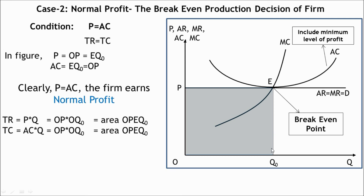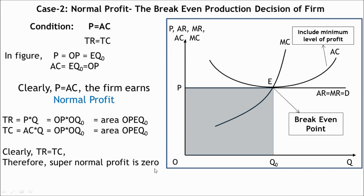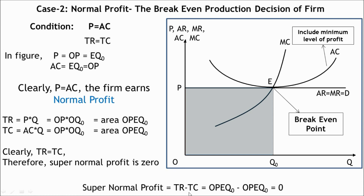Total revenue shown by the area OPEQ0 is equal to total cost shown by the area OPEQ0. That is, total revenue equals total cost, which implies supernormal profit is zero — the firm earns normal profit. Total revenue minus total cost equals area OPEQ0 minus area OPEQ0, which equals zero, indicating the firm earns only normal profit. Zero profit here means normal profit. Since total revenue and total cost are equal, supernormal profit is zero, but the minimum level of profit required for the firm to remain competitive is achieved, as total revenue covers the entire total cost.